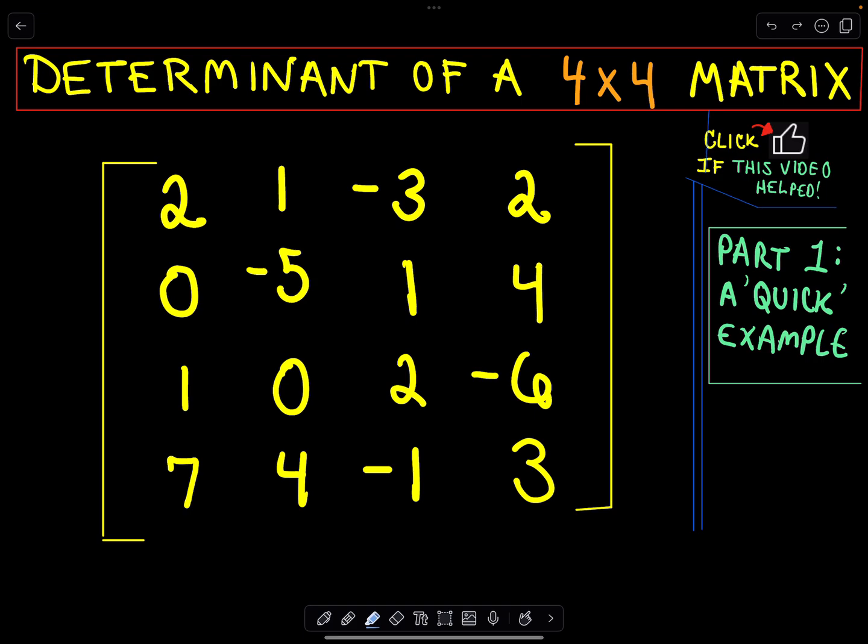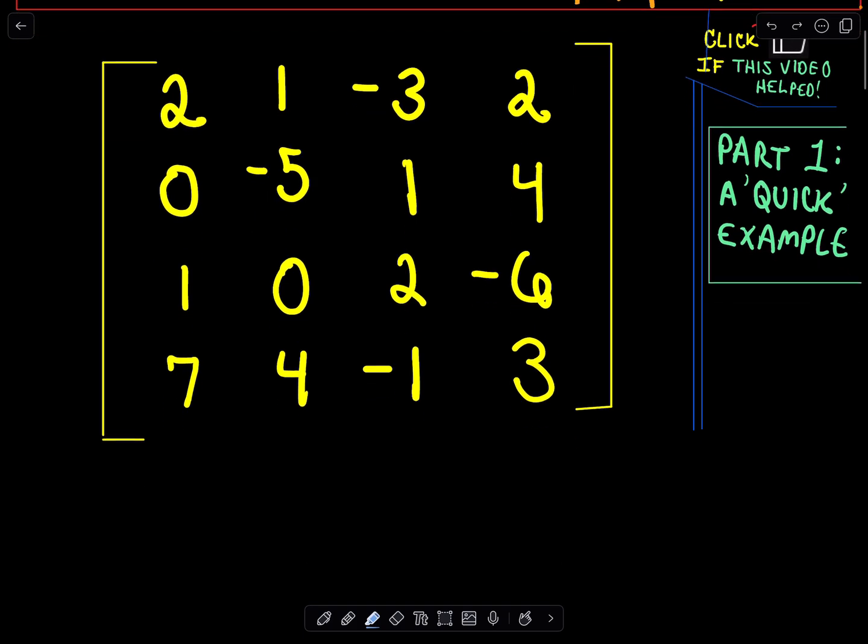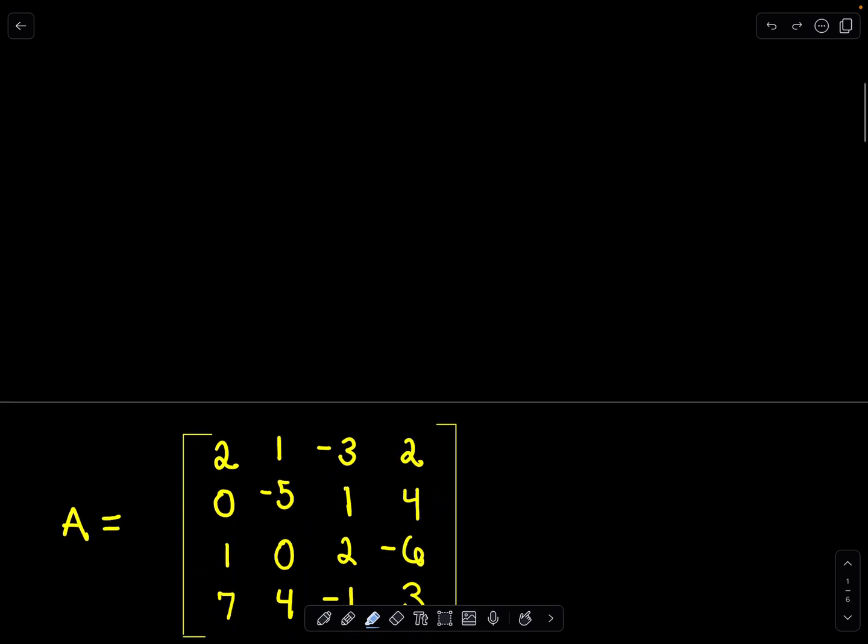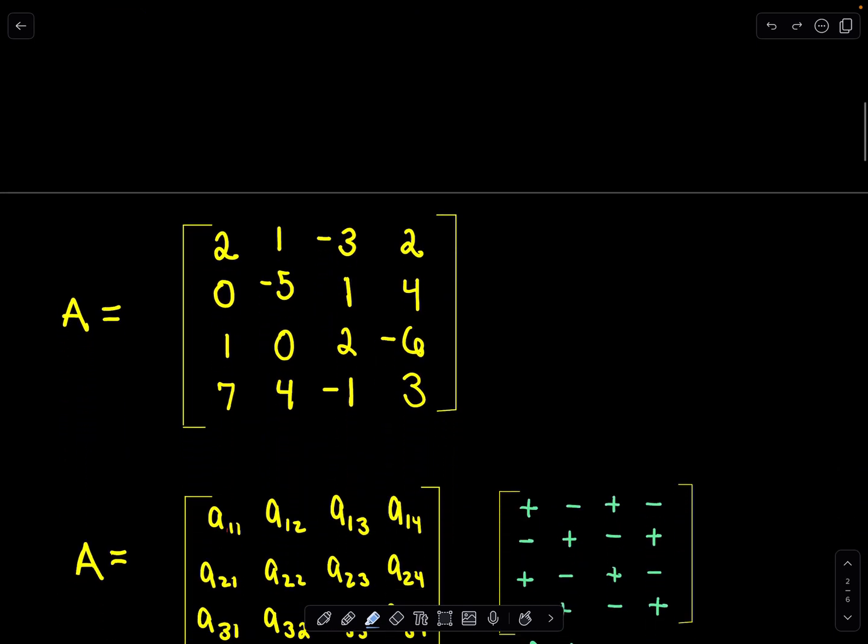So let's look at finding the determinant of a 4x4 matrix. The idea is what we're going to do is we're going to break it up into finding a bunch of 3x3 determinants. And that's going to help us find our solution.